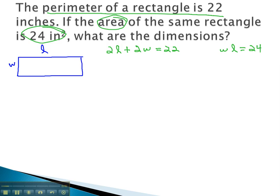We can solve this system of equations by solving the perimeter equation for a variable and plugging that value into the opposite equation.